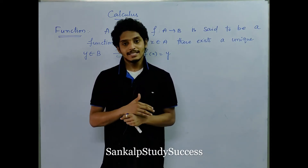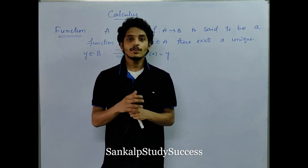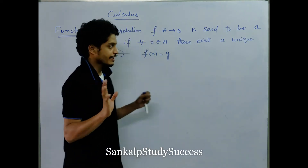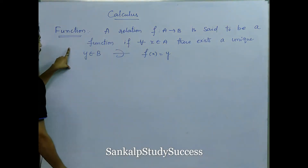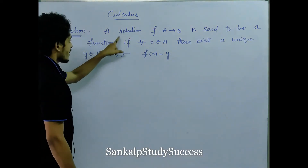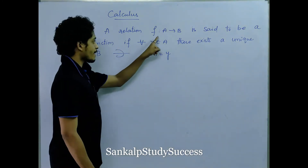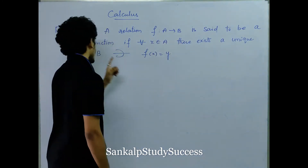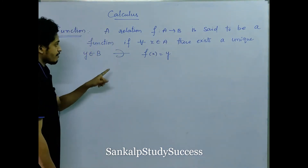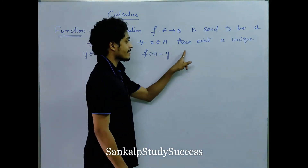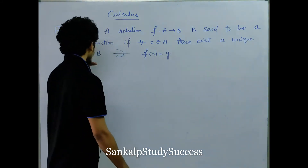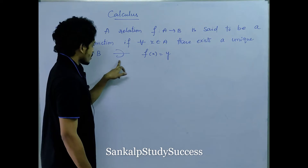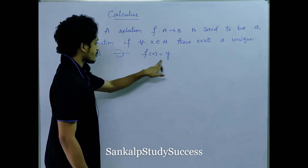The first basic is we need to learn about a function. A relation f mapping A into B, or A tends to B, is said to be a function if for all x belonging to A, there exists a unique y belonging to B such that f of x is equal to y.